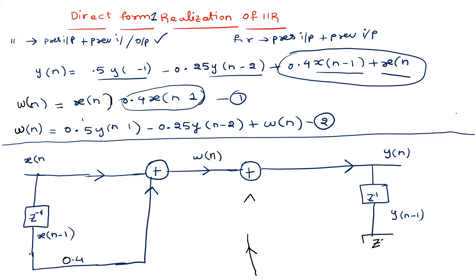Next, if we add another delay z^(-1), we will have y(n-2). The y(n-1) is multiplied with 0.5, so this branch is multiplied with 0.5. This 0.5 times y(n-1) is given to y(n).